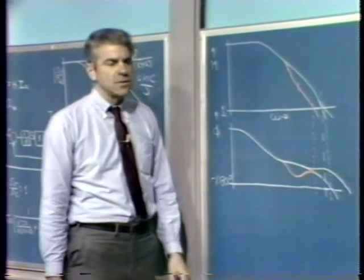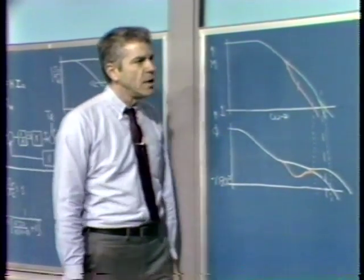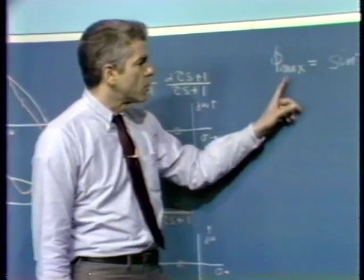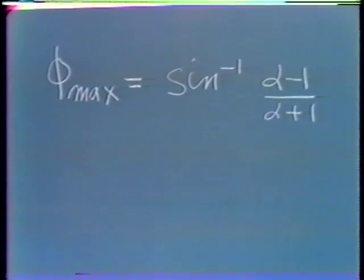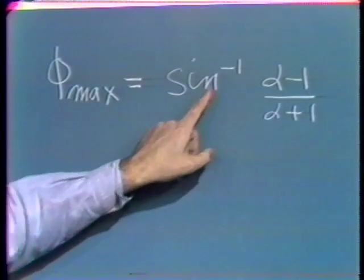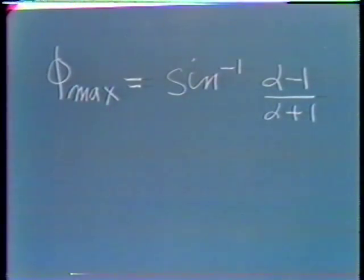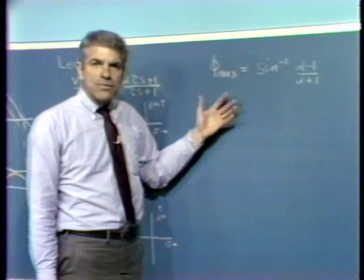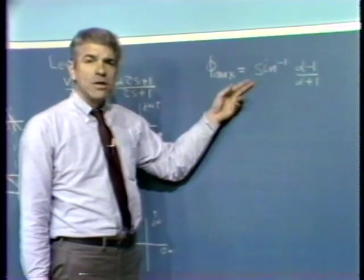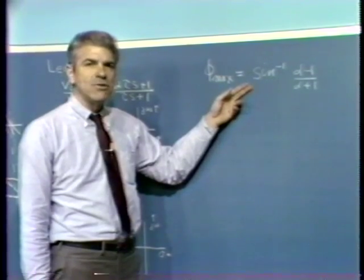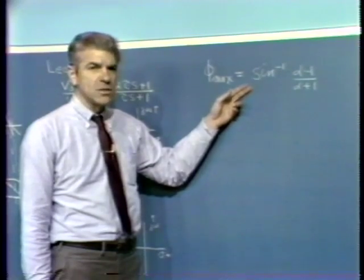One final useful design fact: the maximum phase shift from either a lead or a lag transfer function is arcsin((α − 1)/(α + 1)) — the only difference between lead and lag being the sign. We also recognize that we frequently need to combine a lead or lag transfer function with a modification to the A₀F₀ product. That combination is a very powerful way to improve or modify the performance of a feedback system.